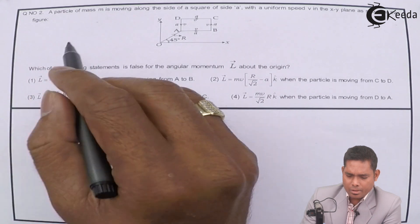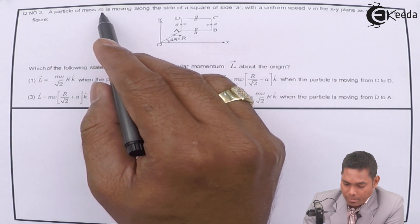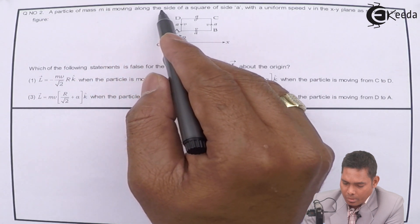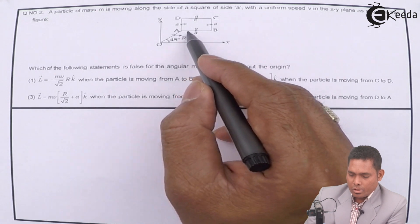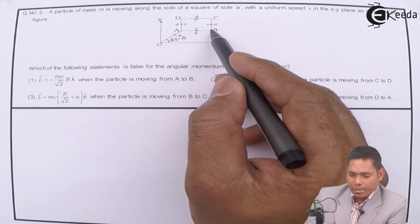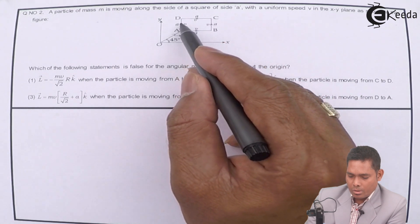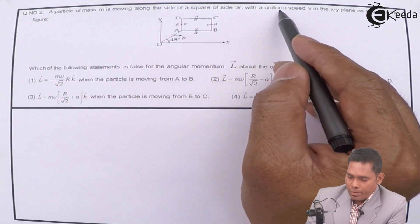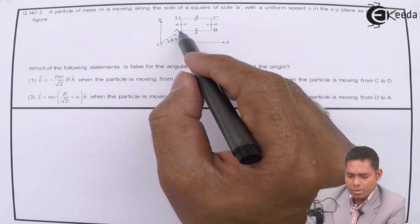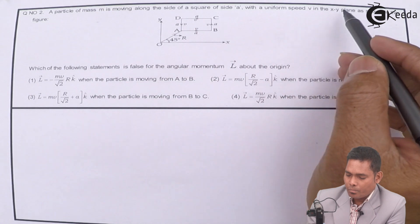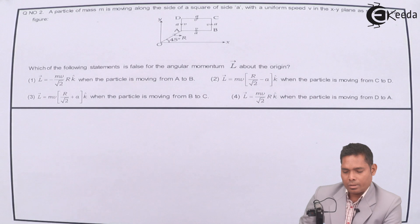Question number 2 says: a particle of mass m is moving along the side of a square of side a — from a to b, b to c, c to d, d to a — with uniform speed, meaning constant speed v, in the xy-plane as shown in the figure.